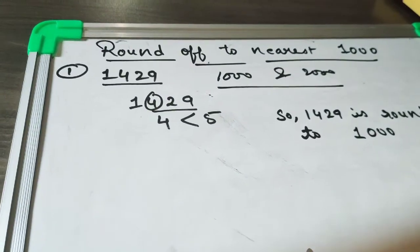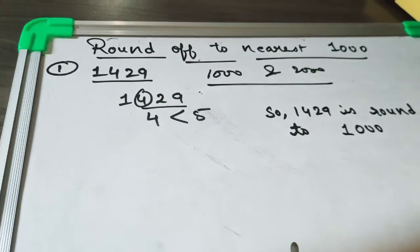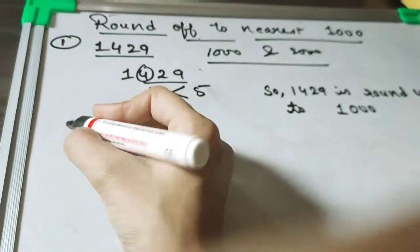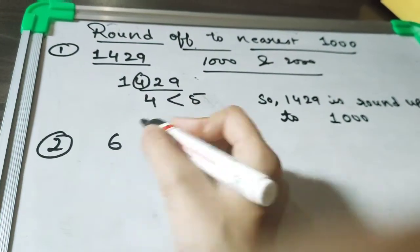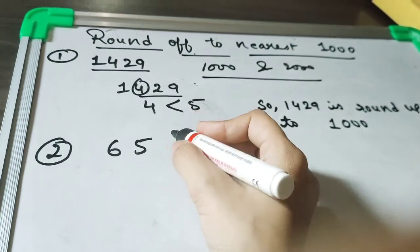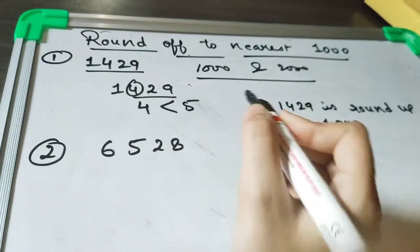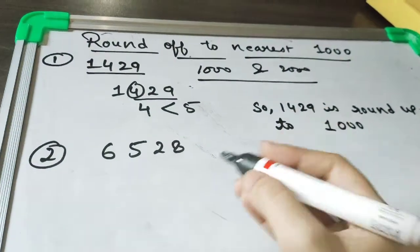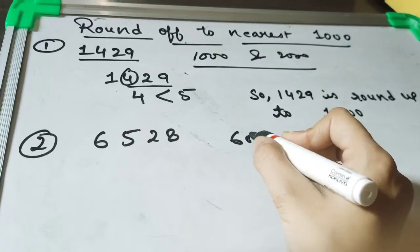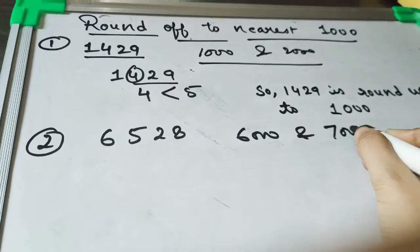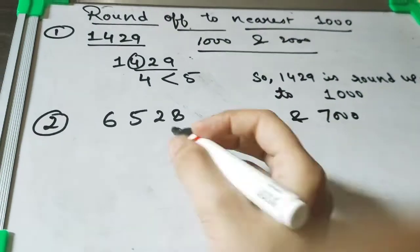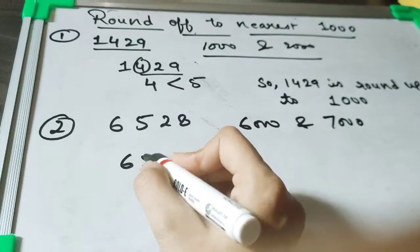Okay, so now it is between which numbers? 6000 and 7000. Now we have to check which place? The hundreds place. So that equals to 5.